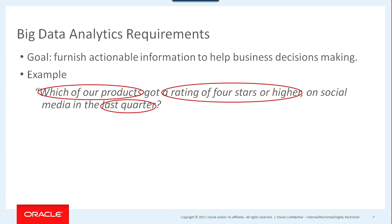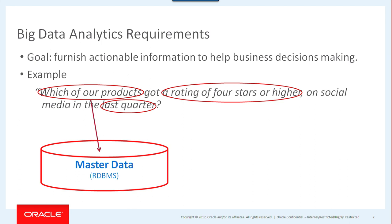Imagine your VP of Sales or VP of Marketing comes to your office and says: can you tell me which of our products got ratings of four on social media in the last quarter? To answer this question, you need master data — products, customers. Those are data used across applications in your company, and there is only one version, one instance. They are usually stored and kept in relational databases.